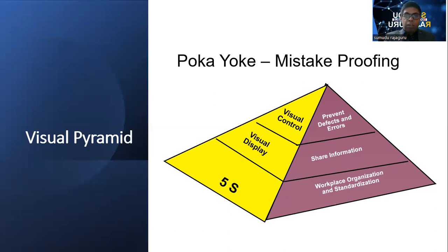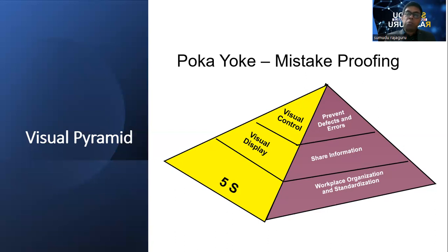For example, when we enter into the organization, usually we come to the reception area. In the reception area, we can display the organization's vision, mission, key objectives, and this year's plan — everything. So whoever comes to the reception can go through all the visuals and get a rough understanding of the organization. When that person moves into the operation floor, all the information can be displayed and visualized — it may be efficiency-related data, absenteeism-related data, or quality-related data.